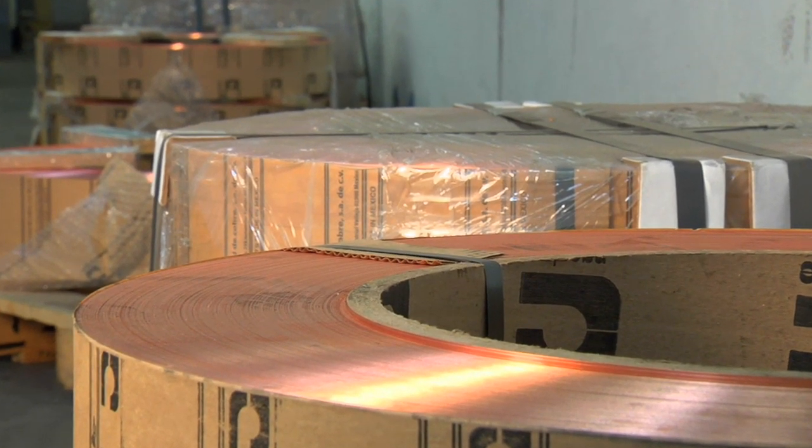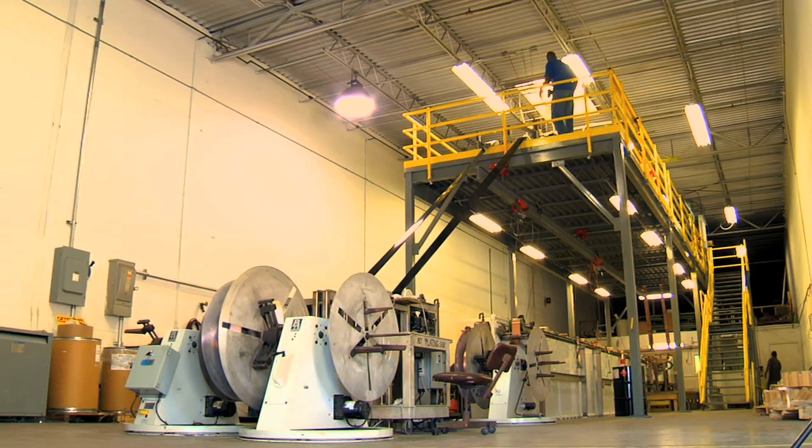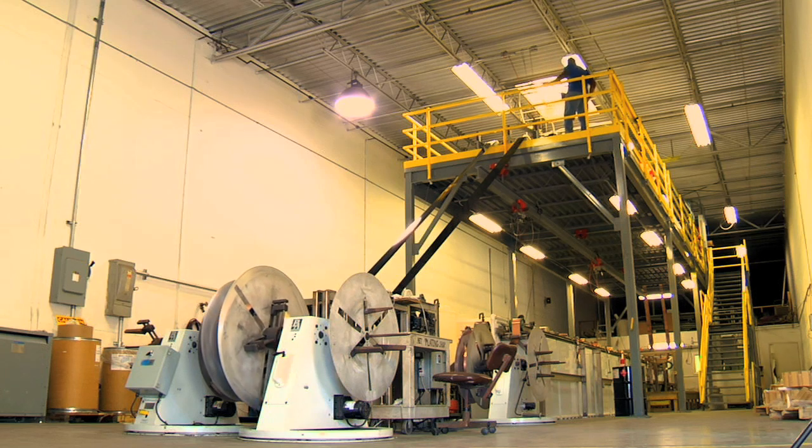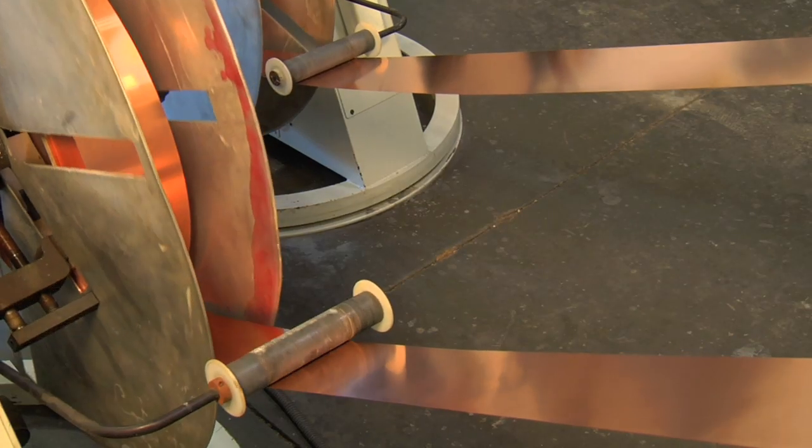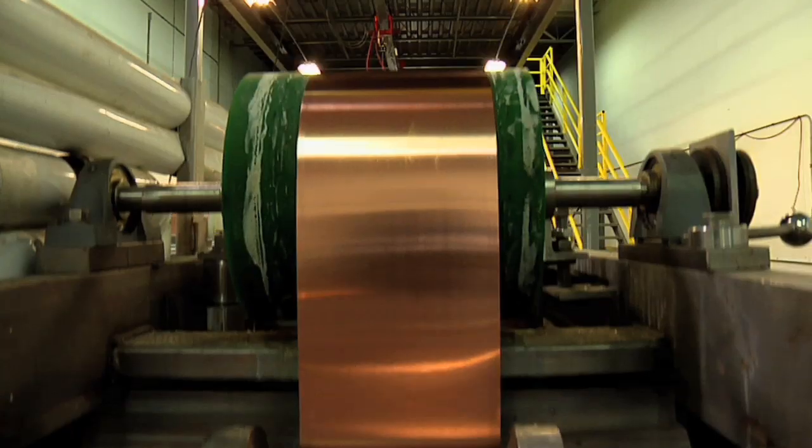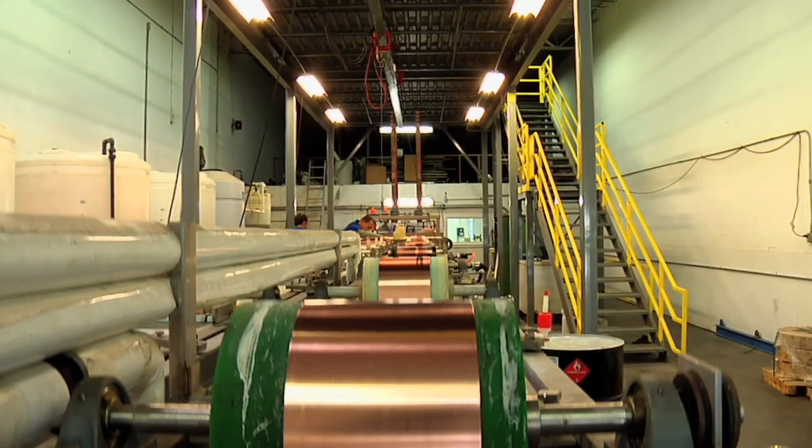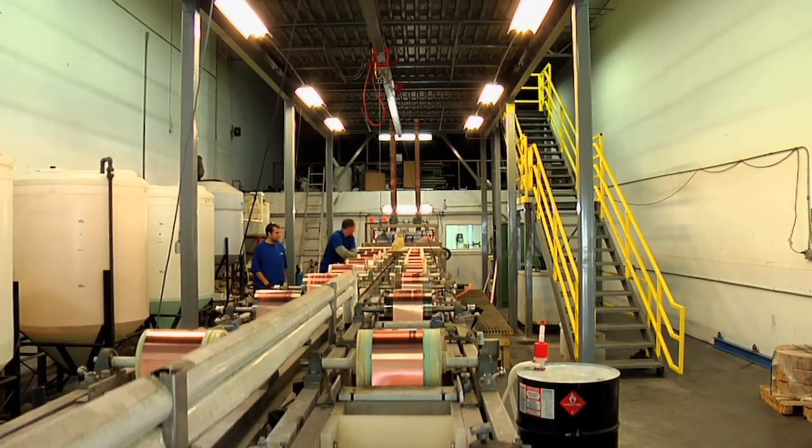The crystal clear coating process begins with a copper strip coil being uncrated and loaded onto an industrial reel-to-reel coating line. The copper strip is then uncoiled into the coating line where it is cleaned and prepped by running through a triple stage pre-clean process.